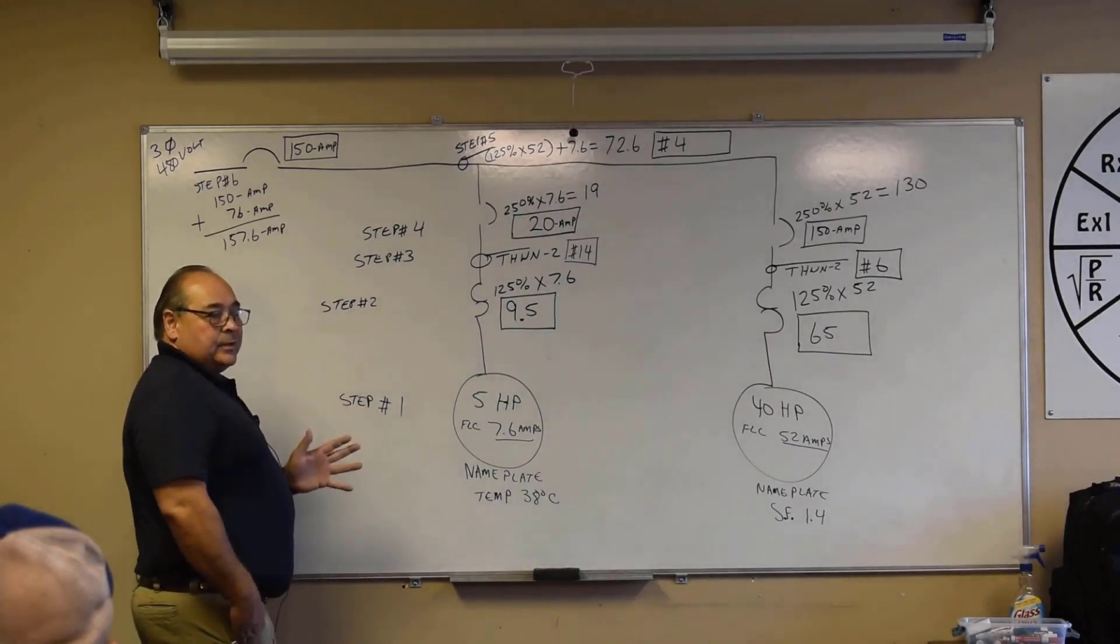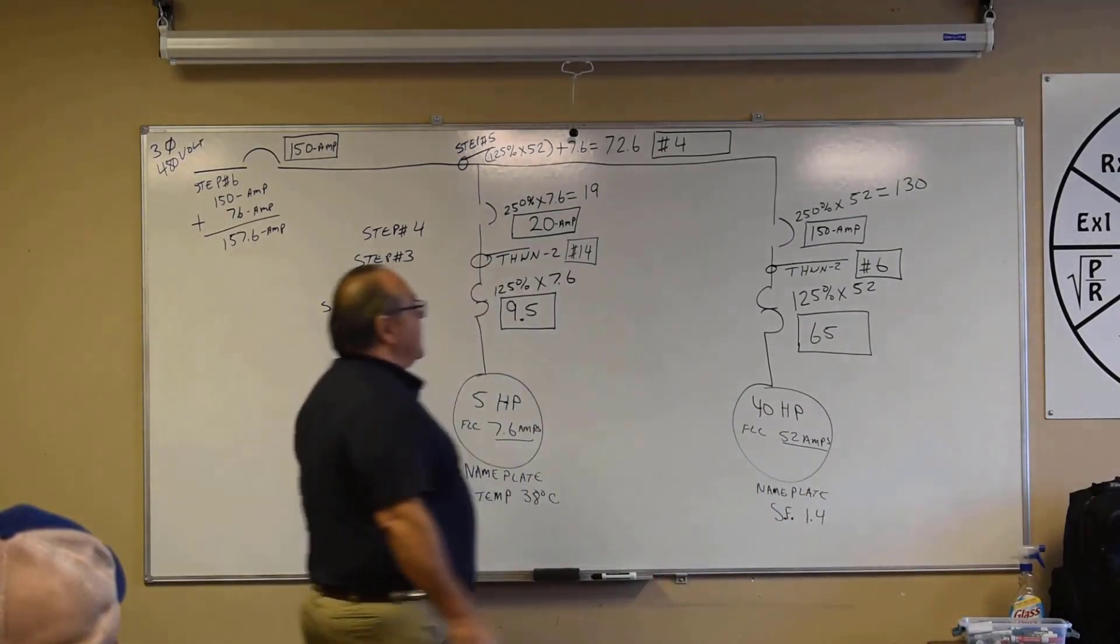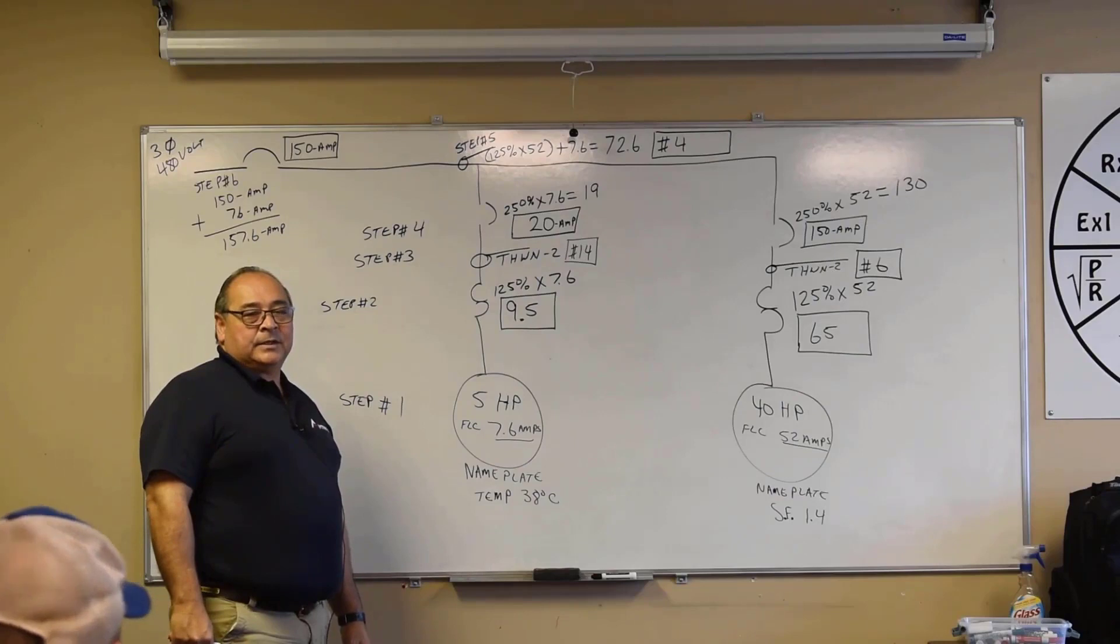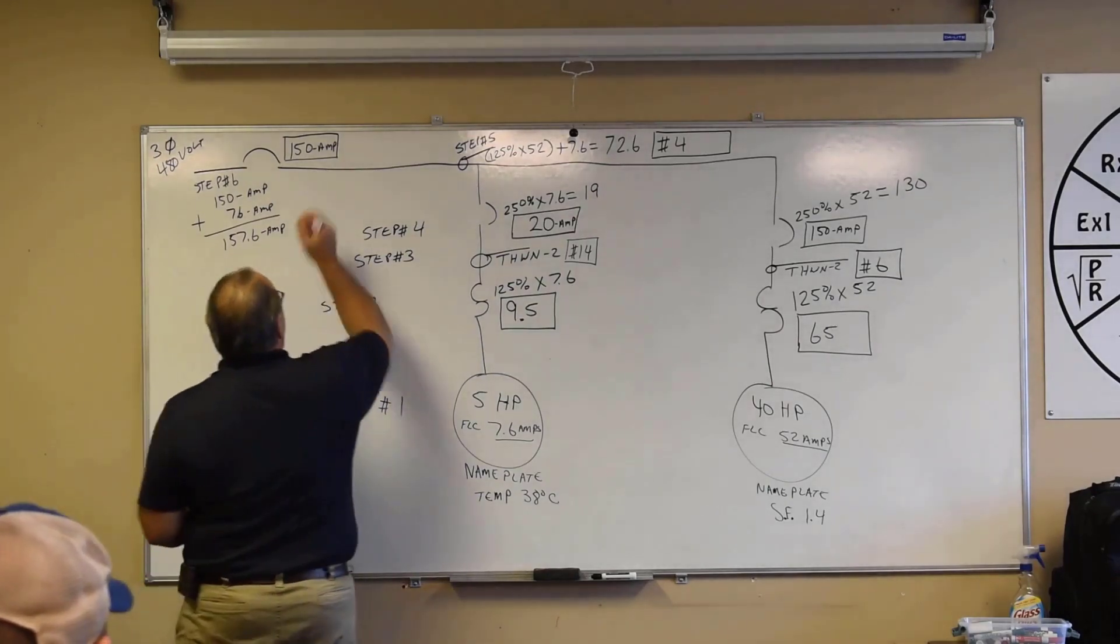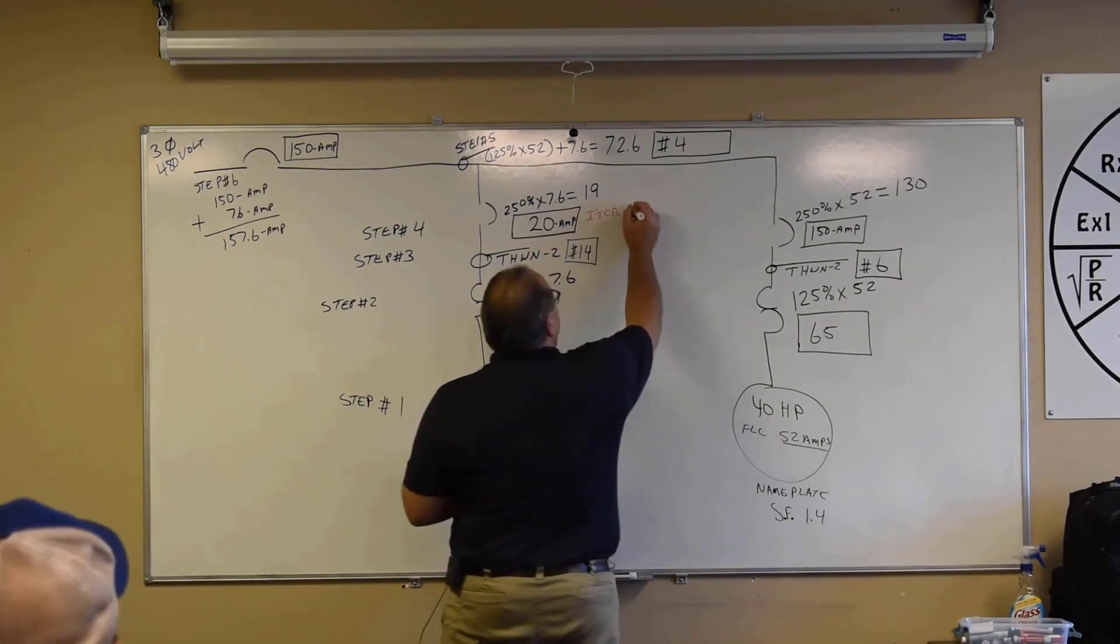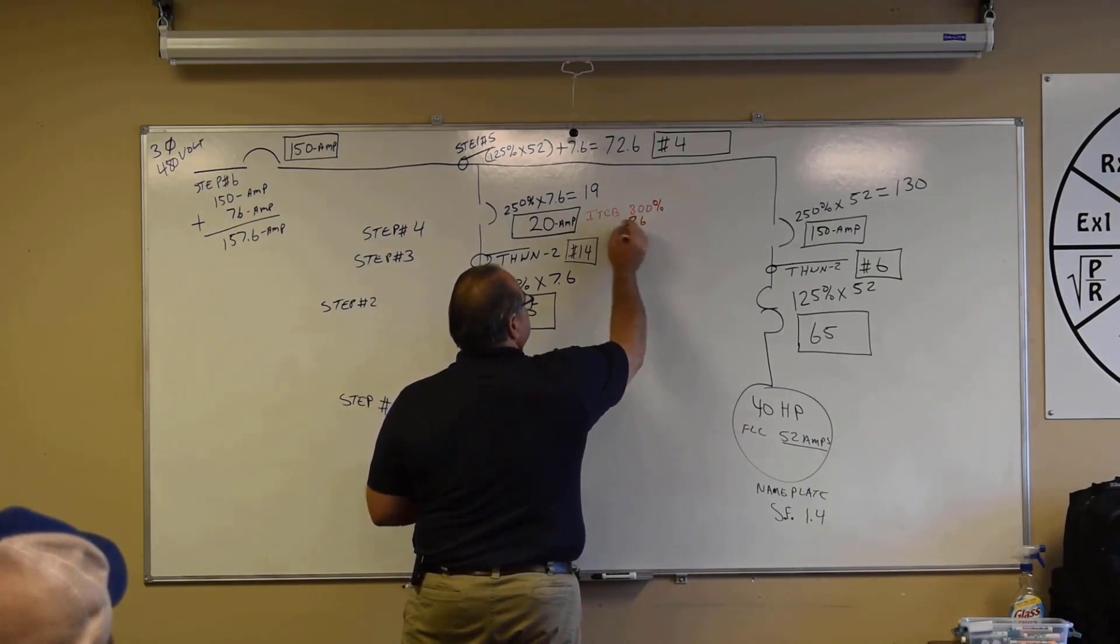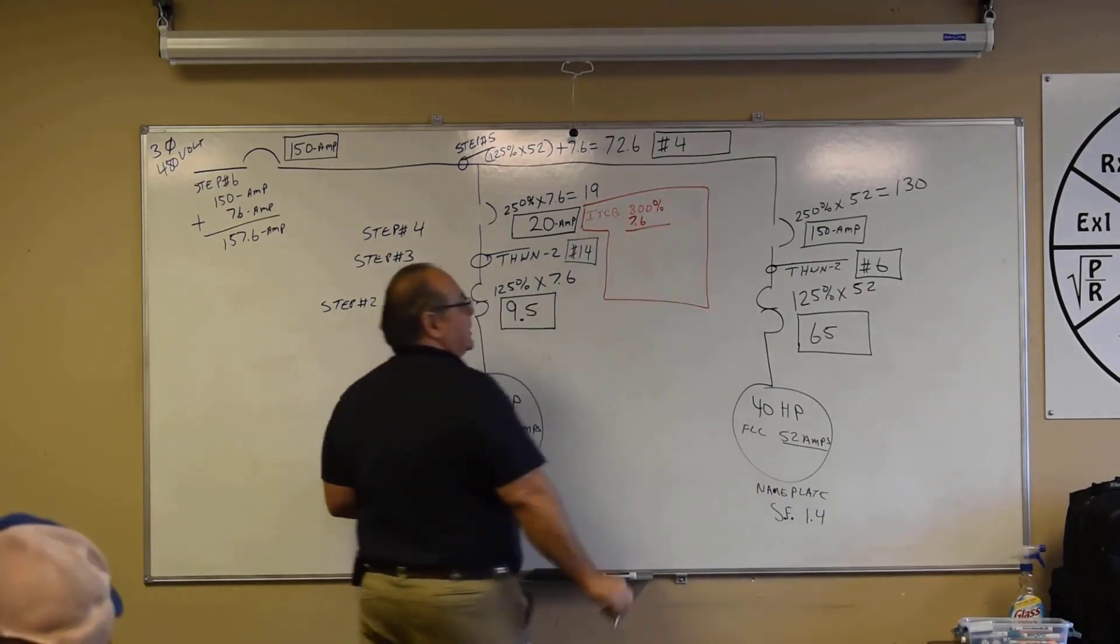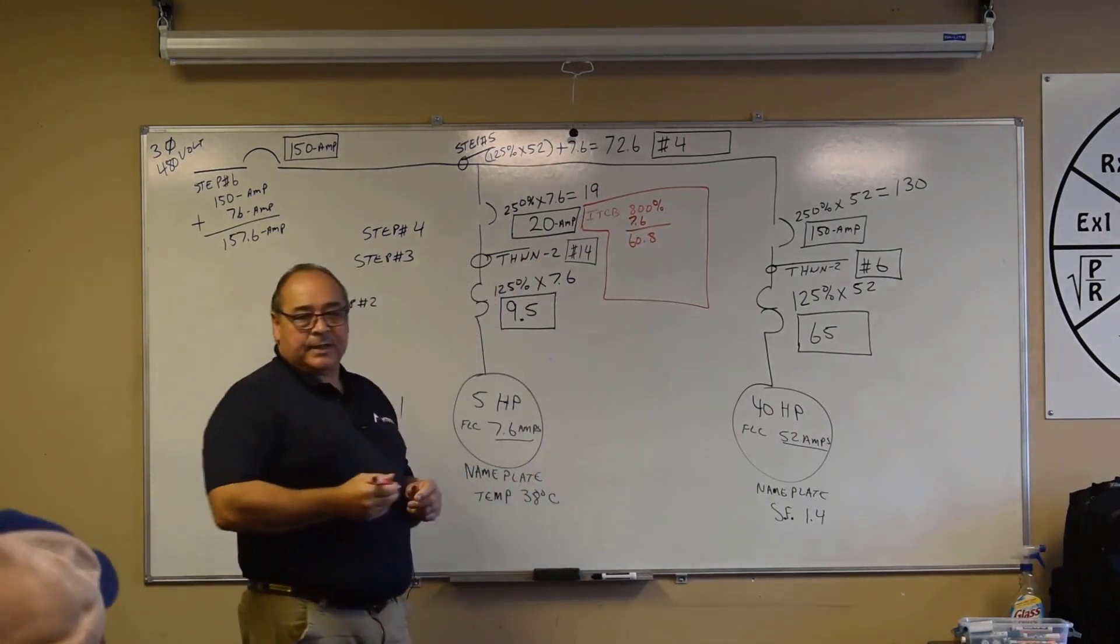I'm going to change one parameter and show you how extreme this can be. Instead of using that inverse time circuit breaker, change one parameter, we're going to use an instantaneous trip circuit breaker. What's the percentage for an instantaneous trip circuit breaker? So we're just going to change one thing. And let's start right here. So for instantaneous trip circuit breaker, it'll be 800 percent. So 800 percent of what? The 7.6. So we'll make this little breakout right here just to kind of get us understanding here. What's 800 times 7.6? 60.8. And we're allowed to go up. 60.8 is not a standard size, so I go up, right? Okay, it'll be a 75 amp.